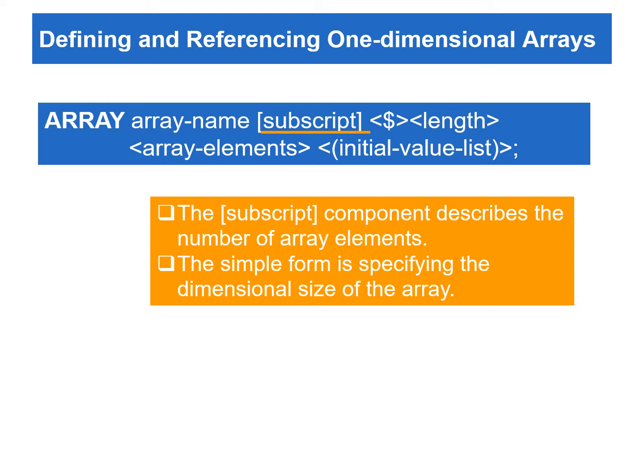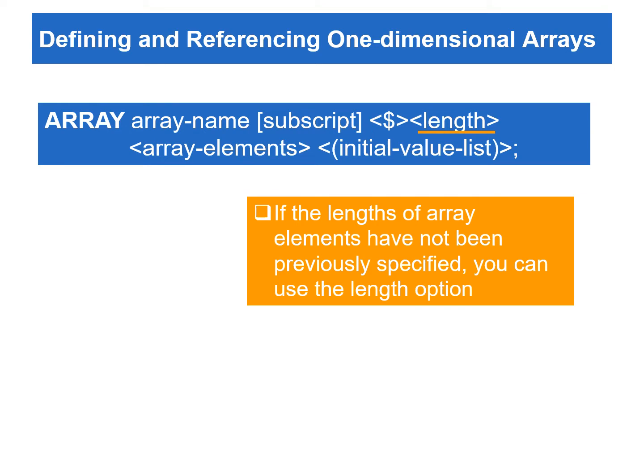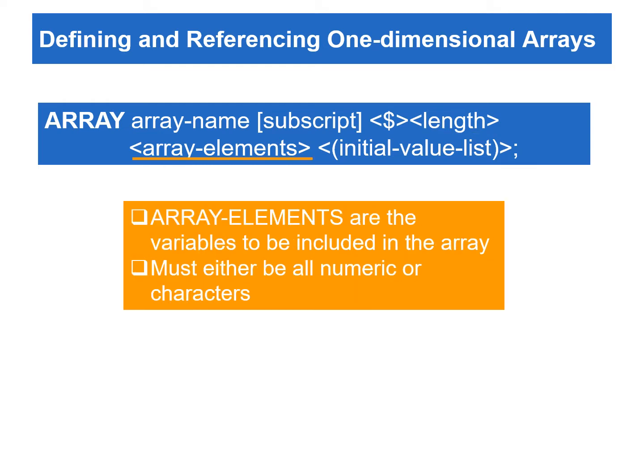The simplest form is to specify the dimensional size of the array. The optional dollar sign indicates that the elements in the array are character elements. You don't need to specify the dollar sign if the array elements have been previously defined as character elements. If the lengths of array elements have not been previously specified, you can use the length option in the array statement. The optional array elements are the variables to be included in the array, which must either be all numeric or character variables.